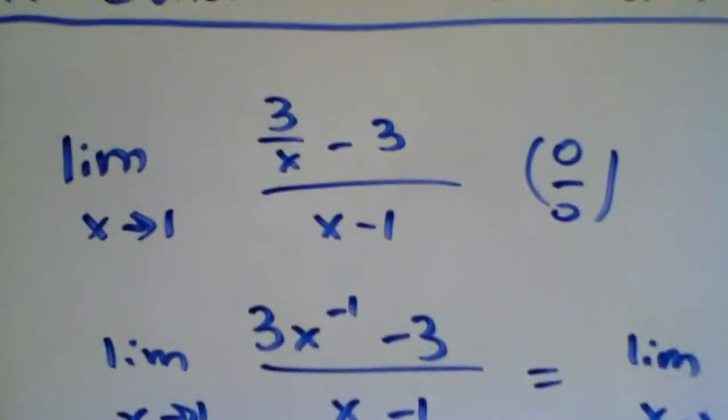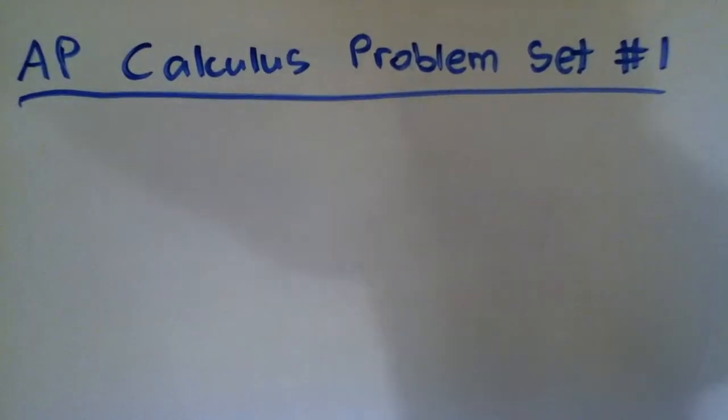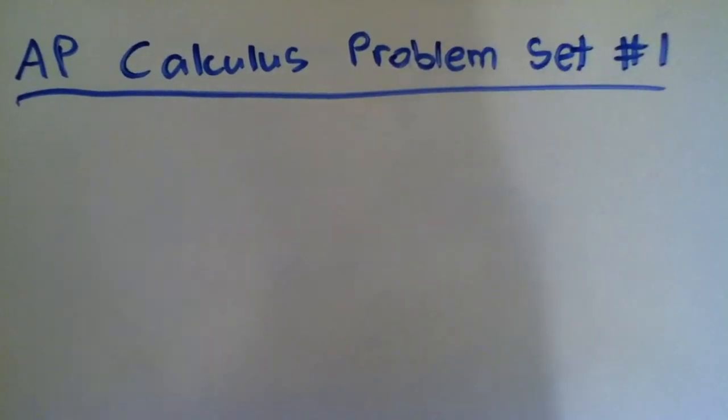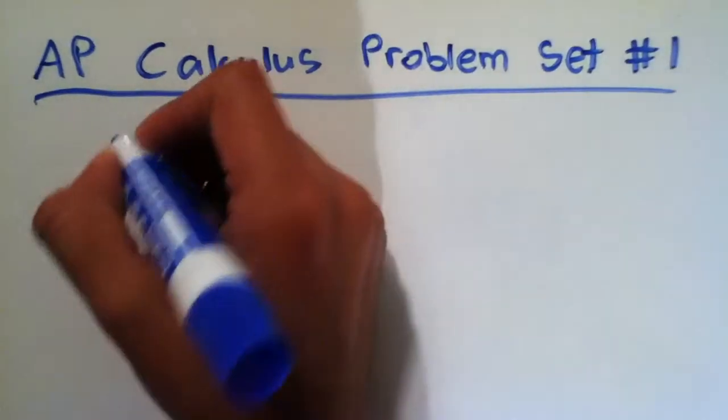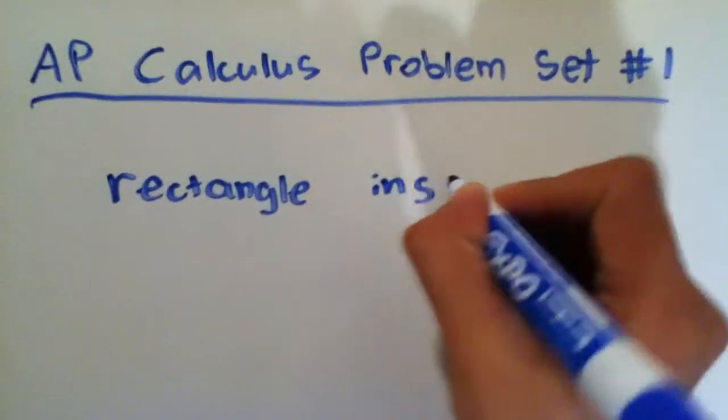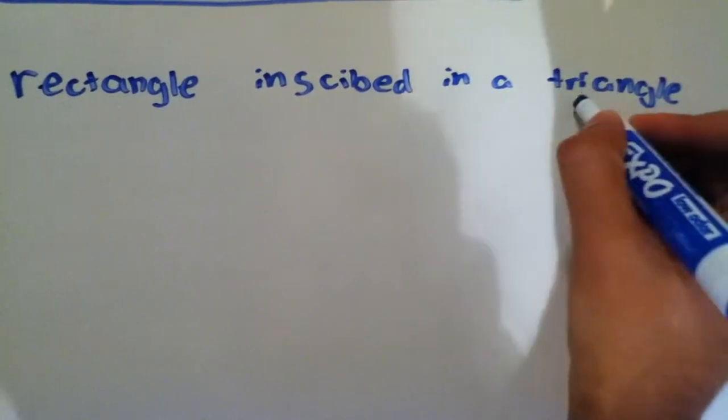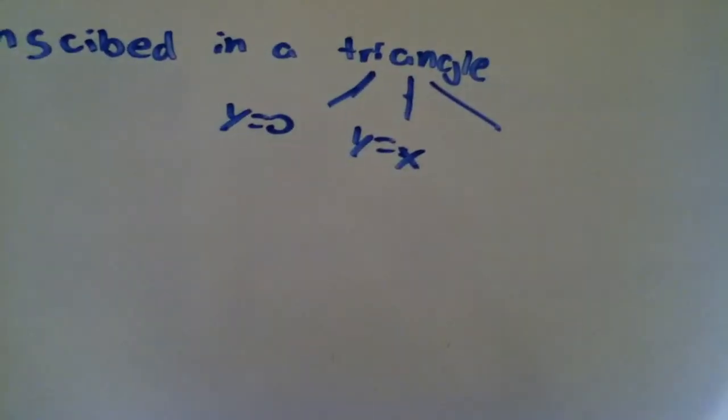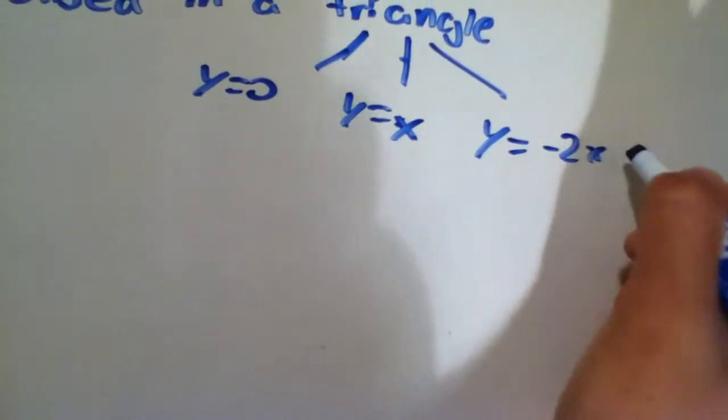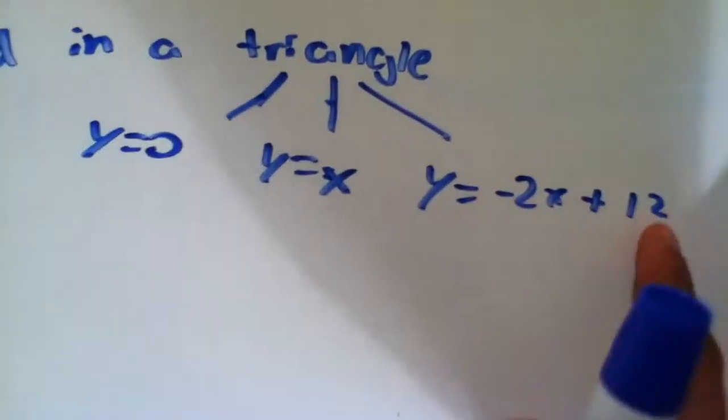The next problem we'll be doing is more of a word problem. And it's to do with a rectangle inscribed between two lines. So this is what the problem is. Again, it's an AP math problem. So a rectangle with one side on the x-axis is inscribed in a triangle formed by the lines y equals x, y equals 0, and 2x plus y equals 12. So there's a rectangle inscribed in a triangle and this triangle is formed by three lines: y equals 0, y equals x, and y equals negative 2x plus 12. Originally, the problem said 2x plus y equals 12, but that's equal to negative 2x plus 12.